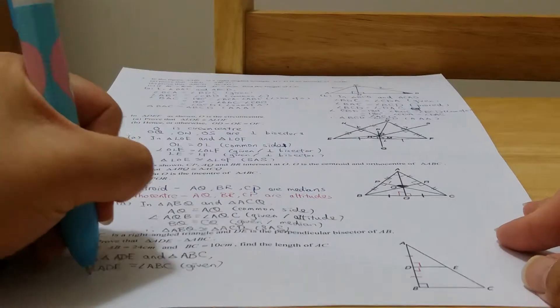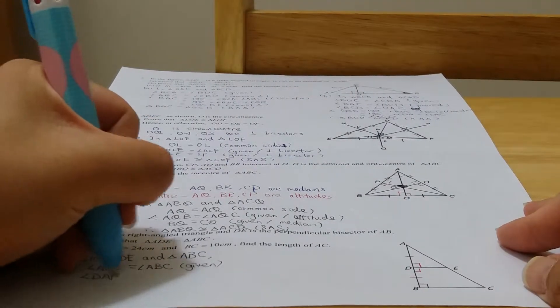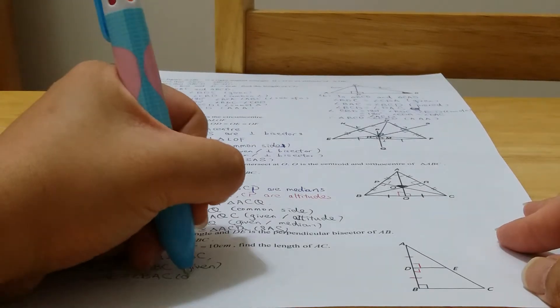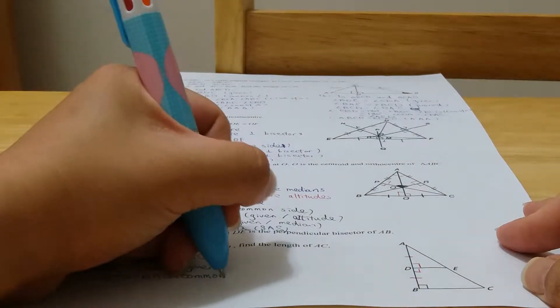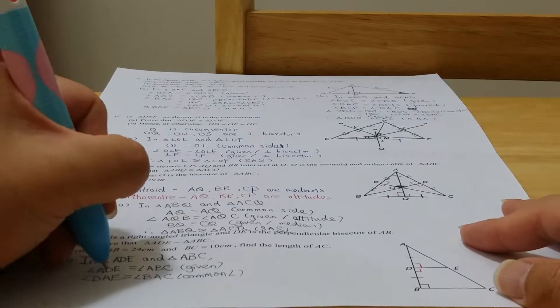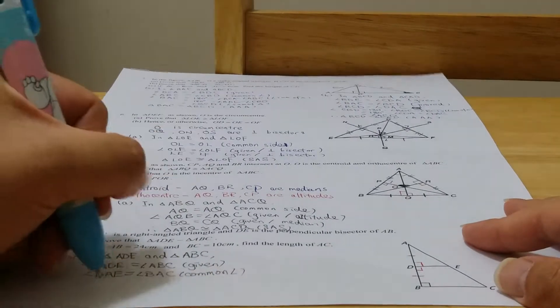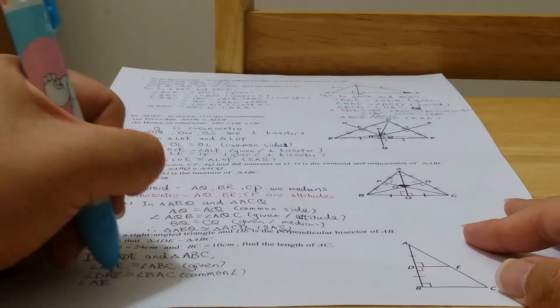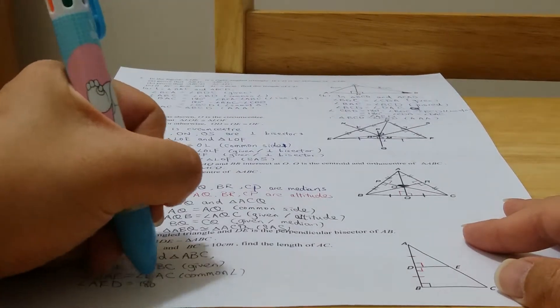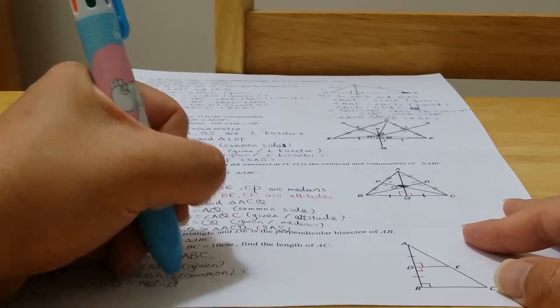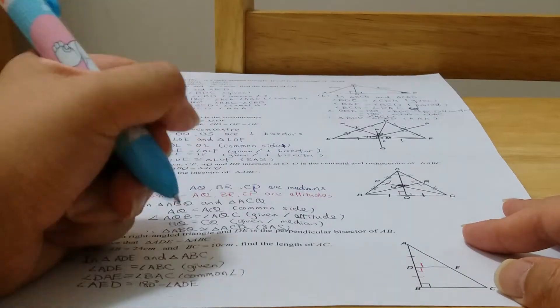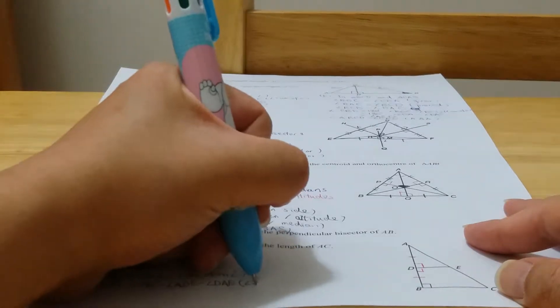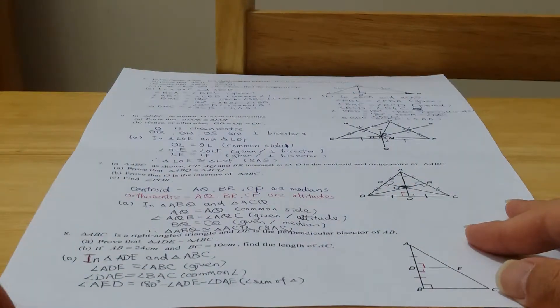180 degrees minus angle ADE minus angle DAE. That is angle sum of triangle. Okay, we have this one.